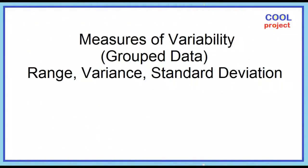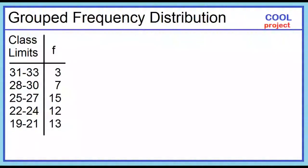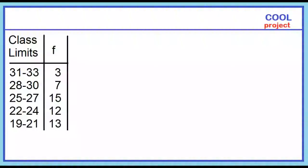Measures of variability for grouped data. How to find the range, variance, and standard deviation? The data represent the ages of 50 Filipino women at first marriage. Using the grouped frequency distribution of the given set of data, find the range, variance, and standard deviation.